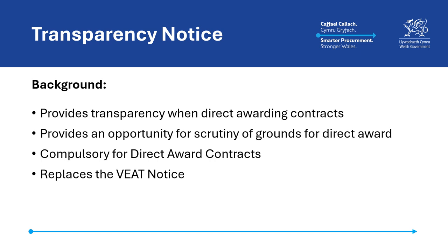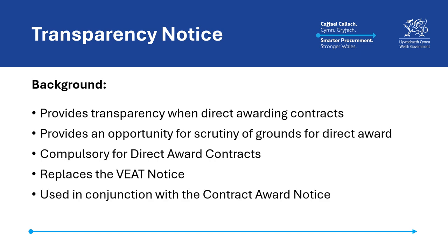This notice is similar in its purpose to the Voluntary Ex-Ante Transparency, or VEAT, notice under the EU regime. However, where the VEAT notice is published voluntarily and triggers a standstill period just before the contract is entered into, the transparency notice is mandated, except in cases of direct award user choice contracts. The transparency notice is used in conjunction with the contract award notice, but unlike the VEAT process, the transparency notice does not start the standstill period. The contract award notice is required prior to the contracting authority entering into the contract which will, in most cases, start the standstill period. There is, however, no set time period between the publication of the transparency notice and the publication of the contract award notice.